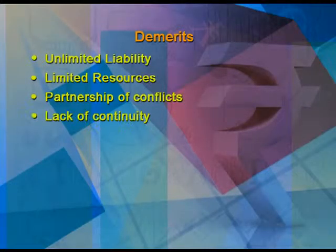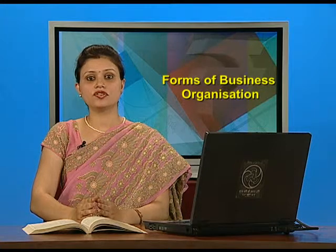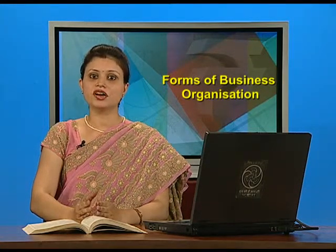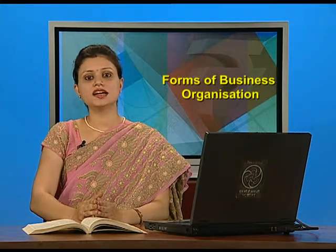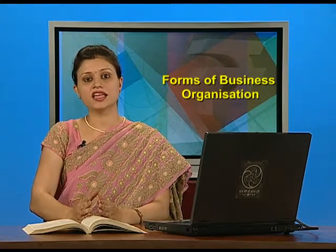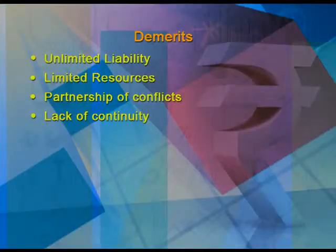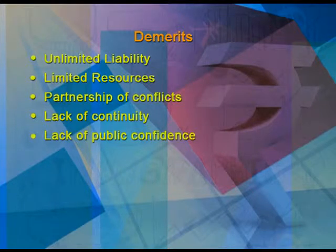The fourth demerit is lack of continuity. In case of death, insolvency, or retirement, the old partnership firm comes to an end, but with the consent of the remaining partners a new agreement can be made to continue. The fifth demerit is lack of public confidence, as it is not compulsory for a partnership firm to publish its books of accounts, so public confidence is not gained.